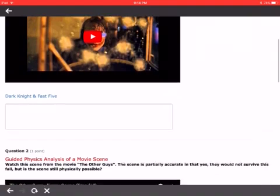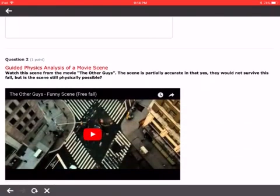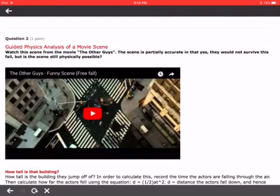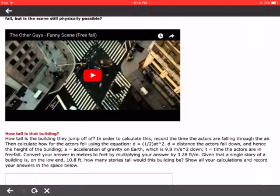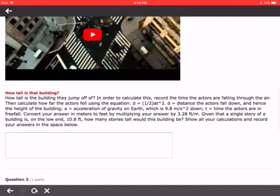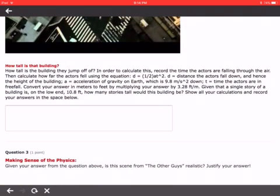In the next part of the assignment, we're going to have you watch a very short scene from the movie The Other Guys. It's less than 30 seconds long and shows an example of free fall. Underneath, we ask you to analyze the scene to determine how tall the building is. If you read the steps in the question description, it really takes you through exactly what you need to do in terms of what measurements you need to make from the video and what calculations you need to do. This should be pretty straightforward.